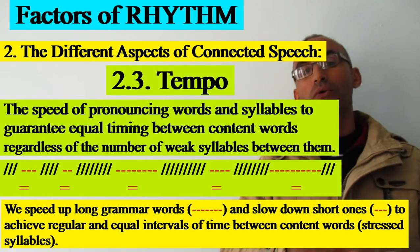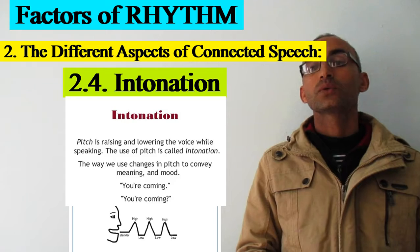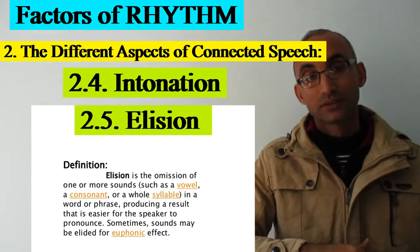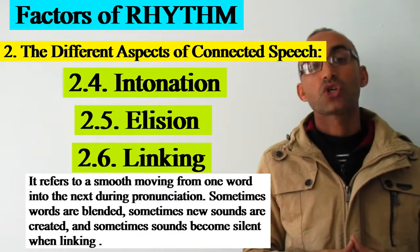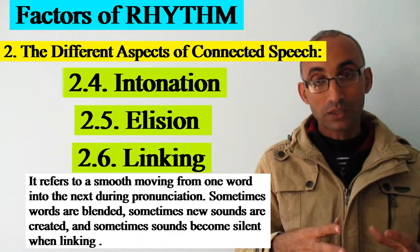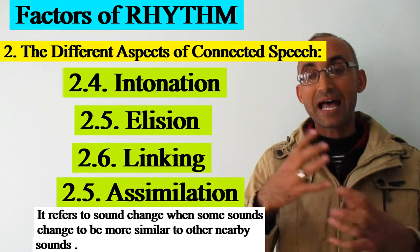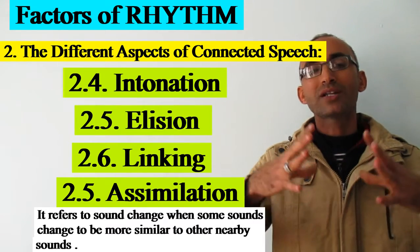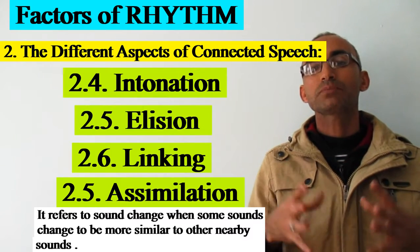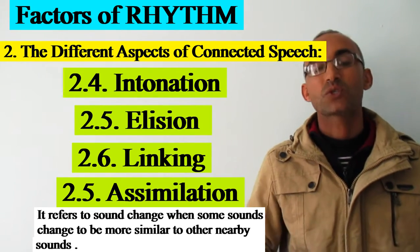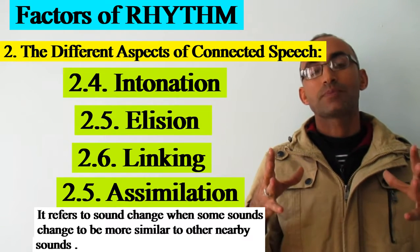We also have other factors like intonation, elision — omitting some sounds — and linking, which means joining sounds between words, as well as assimilation, which means changing sounds. All these contribute to creating the rhythm of the language and making English pronunciation sound natural.